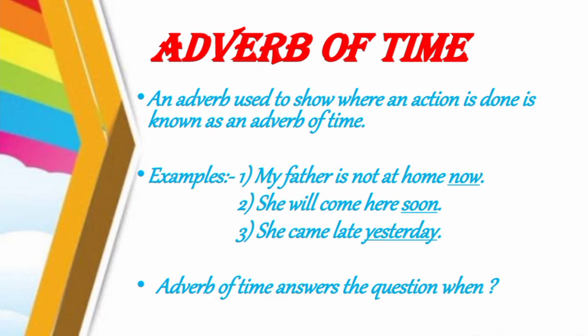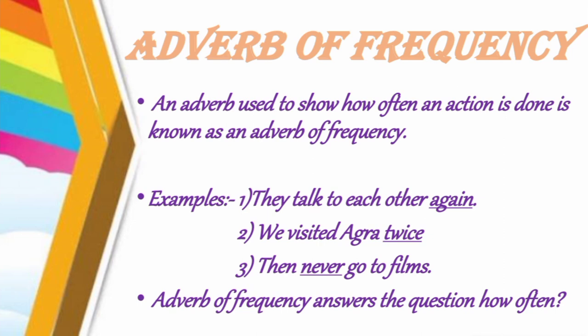Then we have adverb of time. An adverb used to show when an action is done is known as an adverb of time. Examples: 'My father is not at home now'; 'She will come here soon'; and 'She came late yesterday'. The words now, soon, and yesterday are examples of adverb of time. Adverb of time answers the question 'when'.